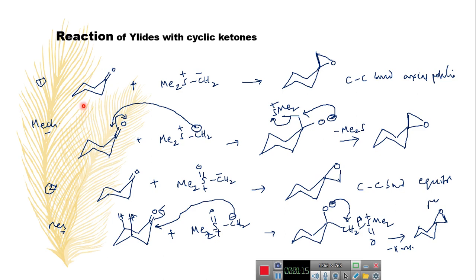Consider this example where the reaction of cyclohexanone treated with dimethyl sulfonium methylide produces oxirane or epoxide as the product, which is well known. If you observe carefully, the C-C bond is formed here — this reaction is generally useful for the insertion of CH₂. The C-C bond in this epoxide is at the axial position. Why is it coming at the axial position? Let us consider the mechanism.